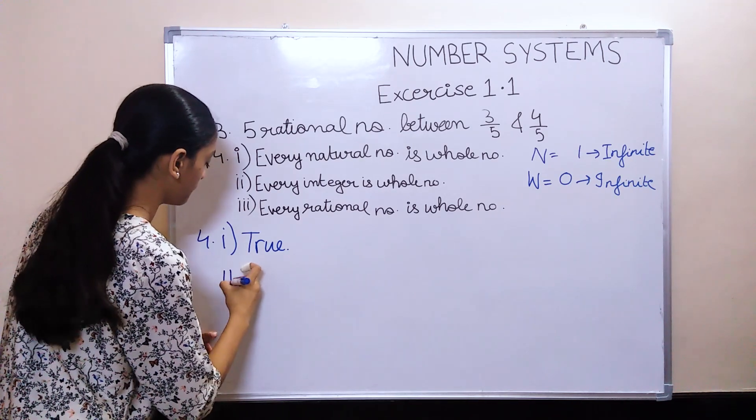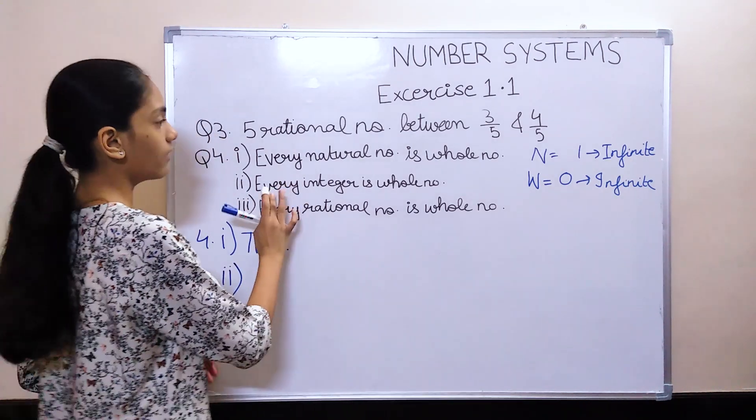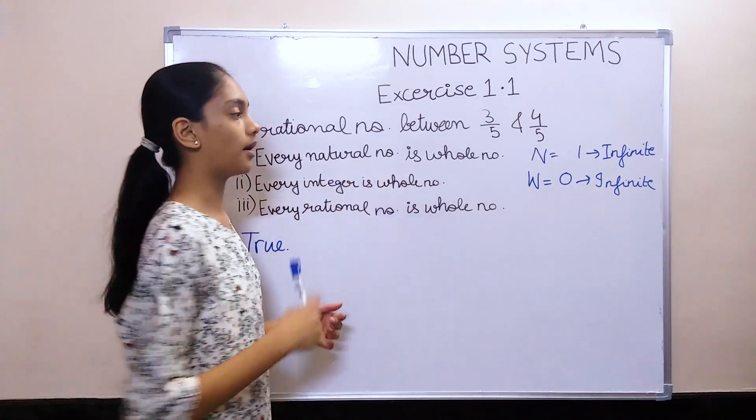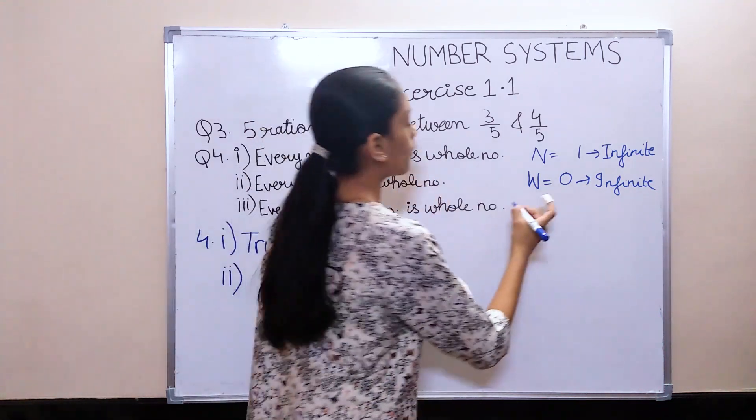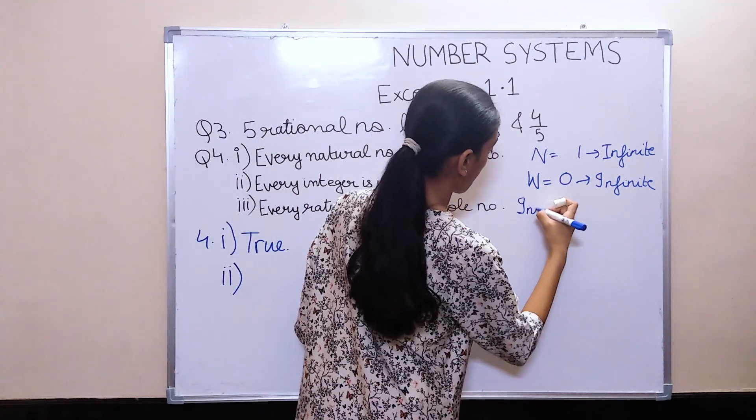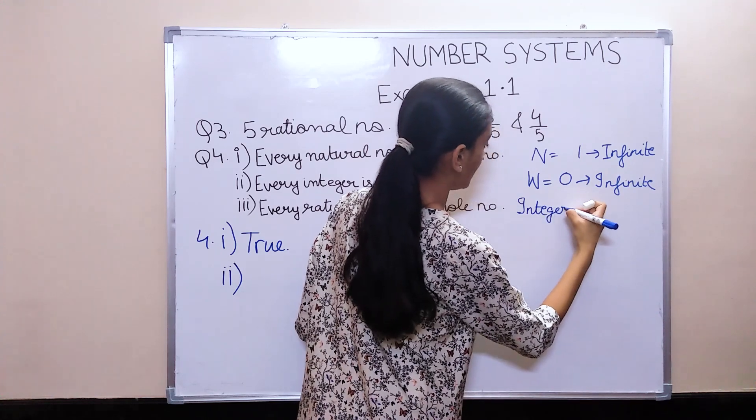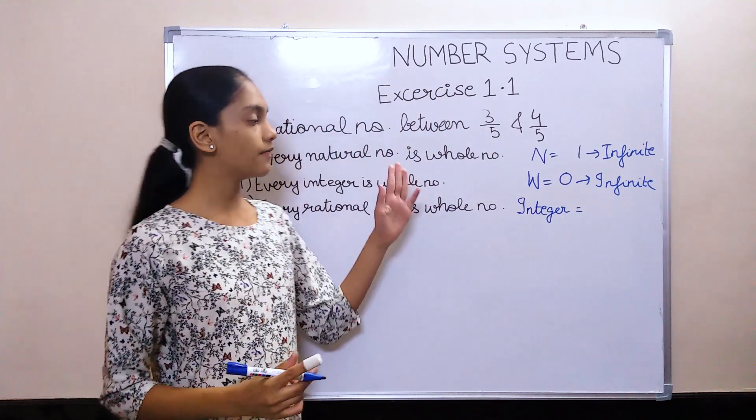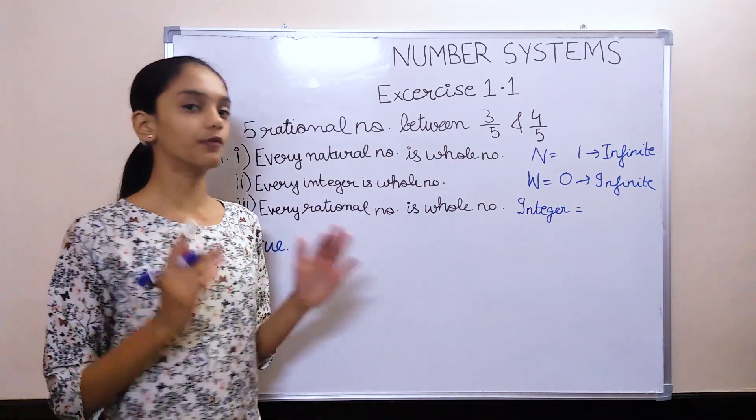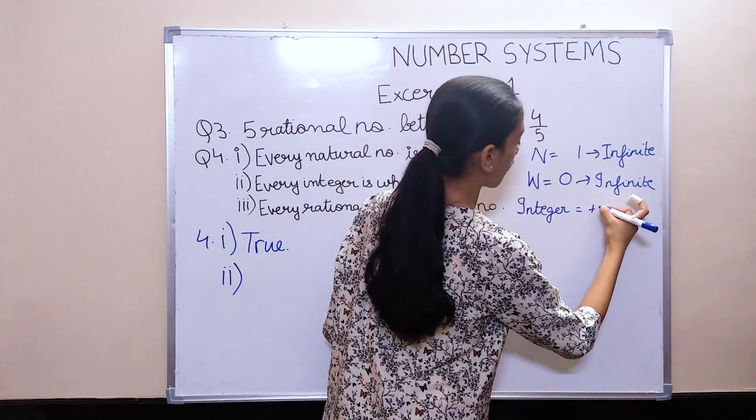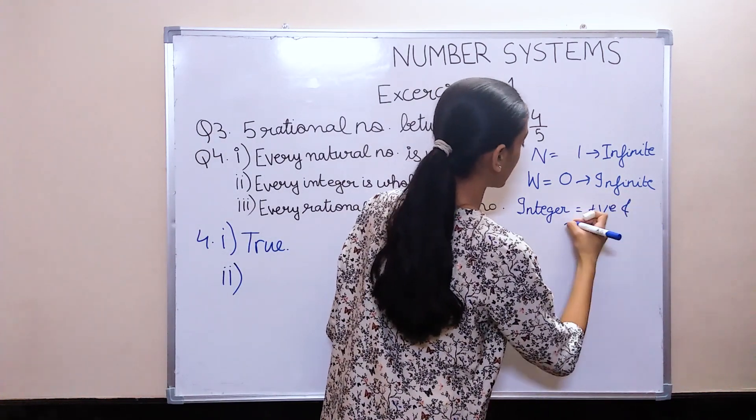Next one, every integer is a whole number. Now we know what is a whole number. What is an integer? Integers are numbers which have positive and negative both. It is a collection of positive and negative numbers.